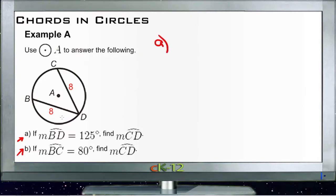It tells us that the measure of arc BD, so from here around to here, is 125 degrees. And it wants us to find the measure of arc CD, so the other side, from here around to here.